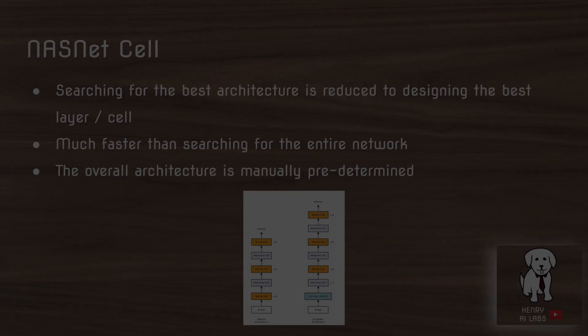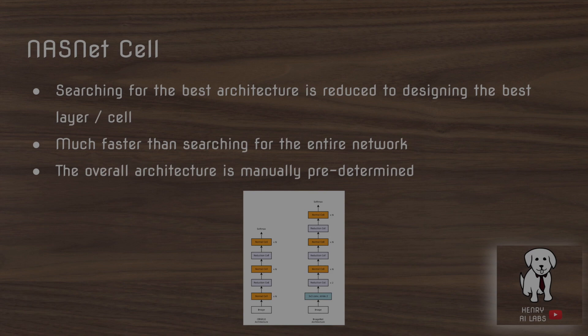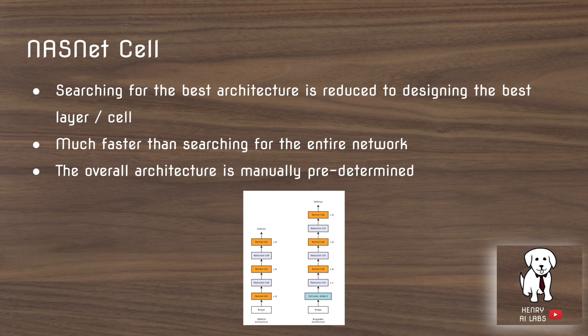The key idea is the neural architecture search net cell. The algorithm is designed to search for a single convolutional layer rather than the entire network. The overall architecture is manually predetermined and consists of repeatedly stacking the found normal and reduction layers on top of each other.